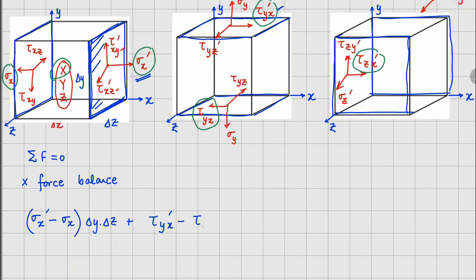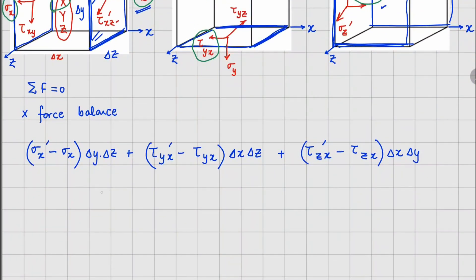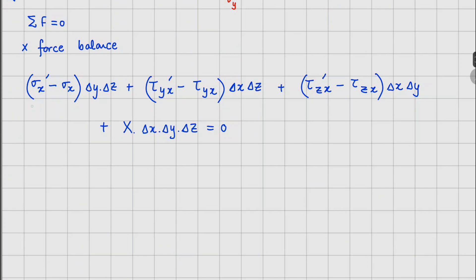From the third cube the x-force contribution is (tau_zx prime minus tau_zx) acting on area delta_x times delta_y. In addition we have the volumetric force: capital X times the volume of the element delta_x delta_y delta_z. Setting the sum equal to zero gives us the complete x-force balance equation.